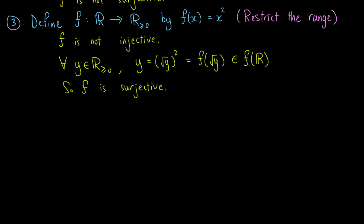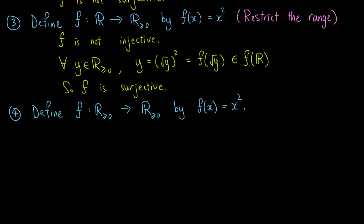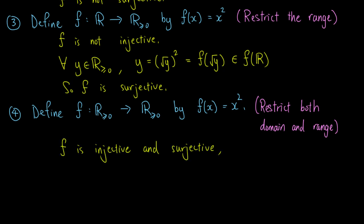As the last example, let's define f from the non-negative real numbers to itself by f of x equals x squared. In other words, we have restricted both the domain and the range in the first example. Using the above arguments, we see that f is both injective and surjective, so f is bijective.